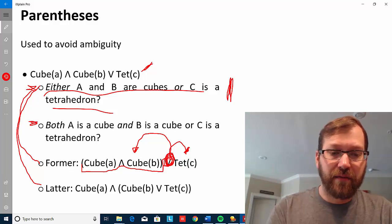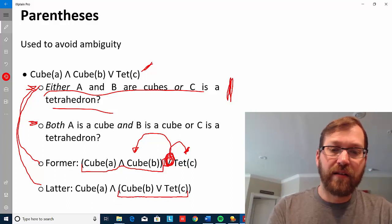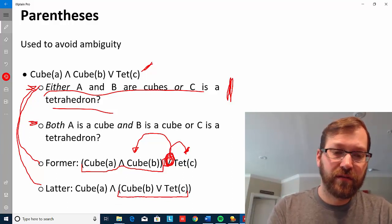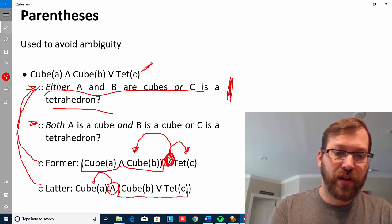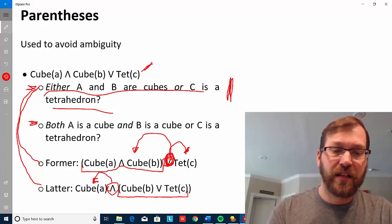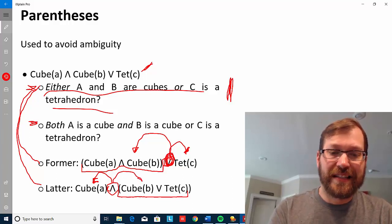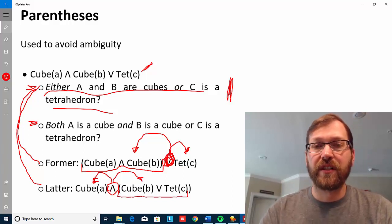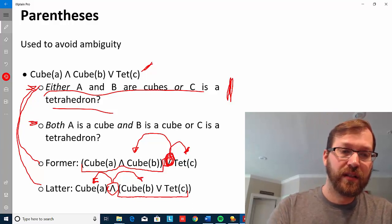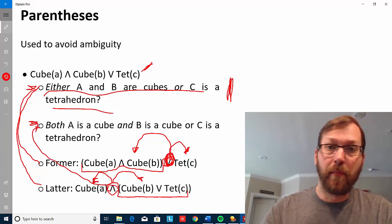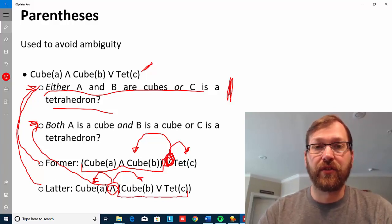But in this case, we have the parentheses here. And so now instead of having a disjunction, what we're dealing with is a conjunction where one conjunct is the atomic sentence A is a cube. And the other conjunct is the disjunction, either B is a cube or C is a tetrahedron. And that's going to correspond to what this says, both A is a cube and either B is a cube or C is a tetrahedron.